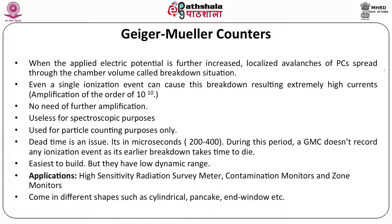The same pulse height is achieved for any kind of radiation, so GM counters are used for particle counting only. The resolving time or dead time is very high — between 200 to 400 microseconds — during which the GM counter does not record any ionization event. But it is the easiest among all three types to build and has high sensitivity, so it can detect even a small amount of radiation. GM counters are used in high-sensitivity radiation survey meters where low levels of radiation are expected, and for contamination monitors and zone monitors. They come in cylindrical, pancake, and end-window shapes depending on the application.